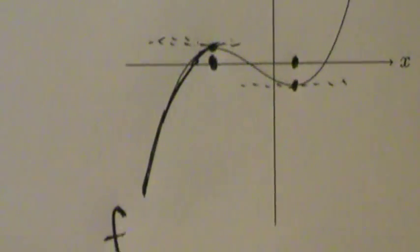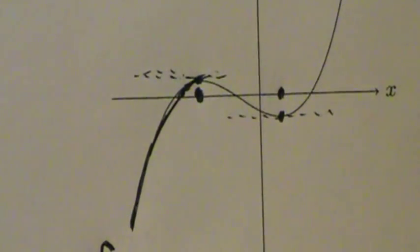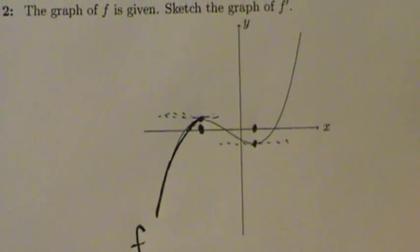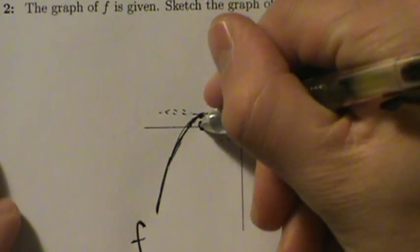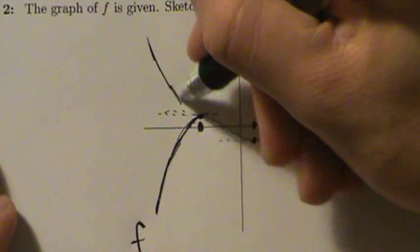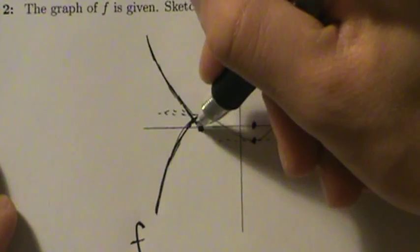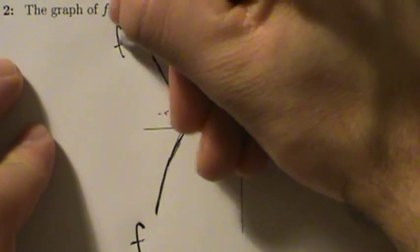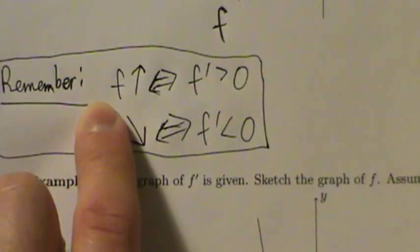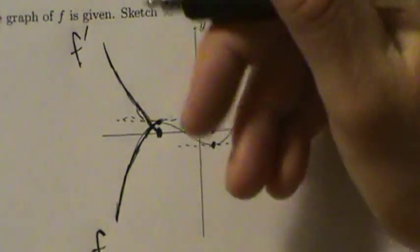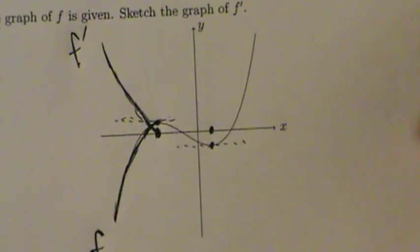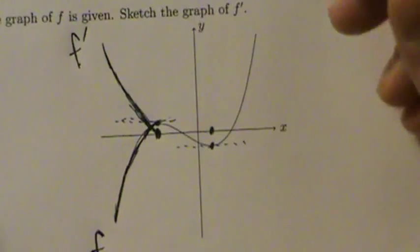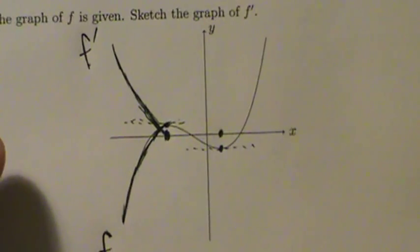Here's our graph of f, and we see that f increases this entire time. So that means the derivative of f — in other words, f prime — has to be positive. And it has to touch this point on the x-axis eventually, so the derivative of f has to be doing something like this. The derivative itself may be increasing or decreasing — that doesn't matter so much. All that matters is that f prime has to be positive when f is increasing.